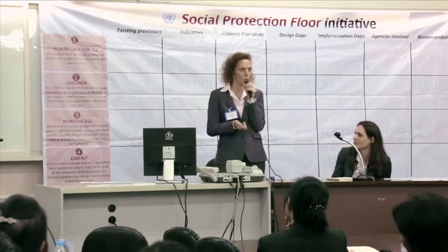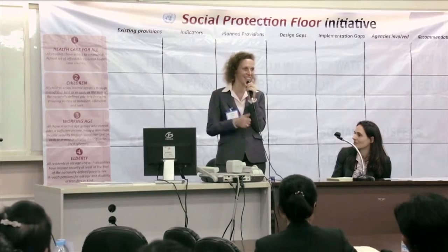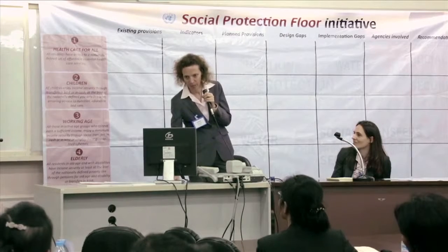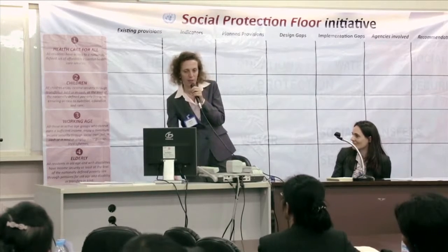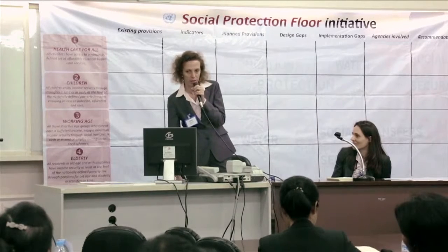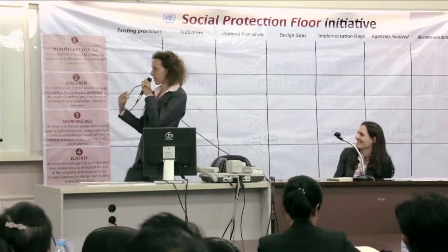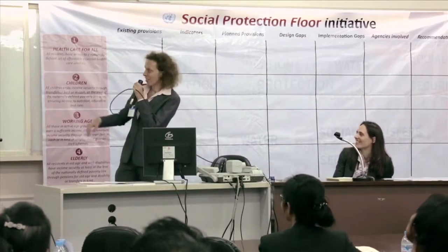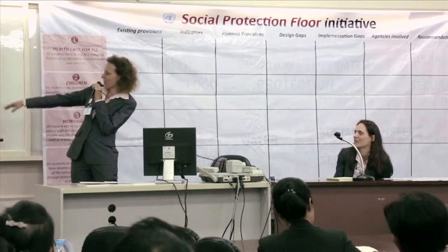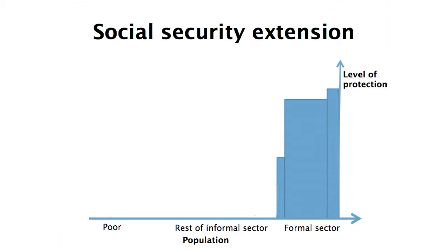This classification is simplified — the reality is more complex because you also have partially contributory schemes and others. Moving to the second part: how to extend social security and what is the ILO strategy. On this graph, the horizontal axis shows the population and the vertical axis shows the level of protection. People in the formal sector usually already have some social protection — in Cambodia, for instance, the bar would be lower than in other countries.